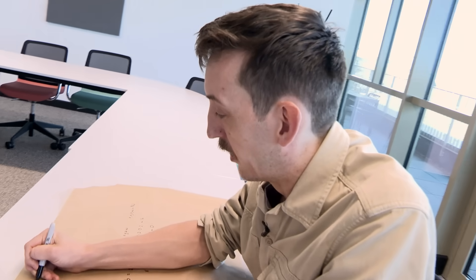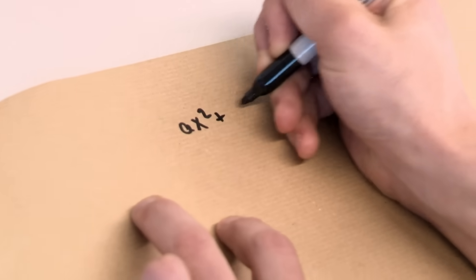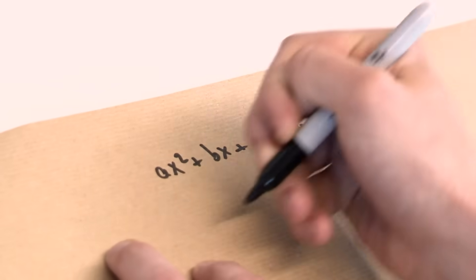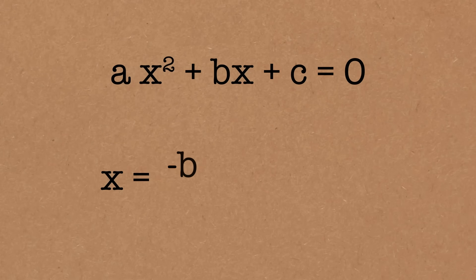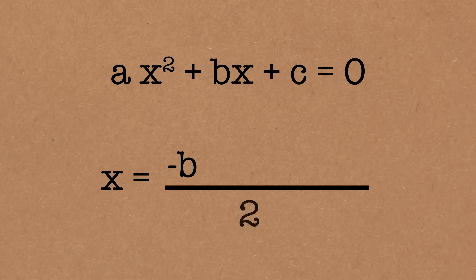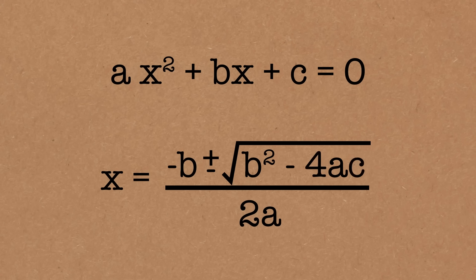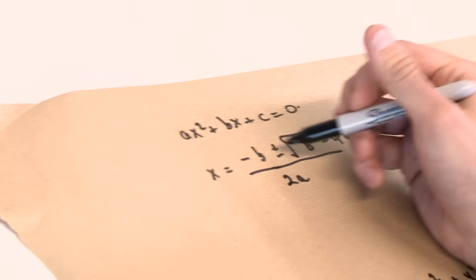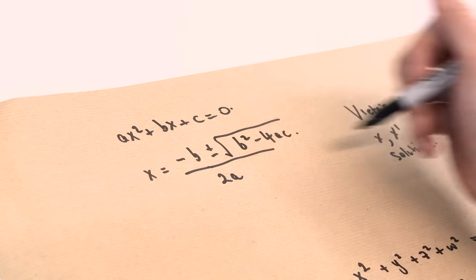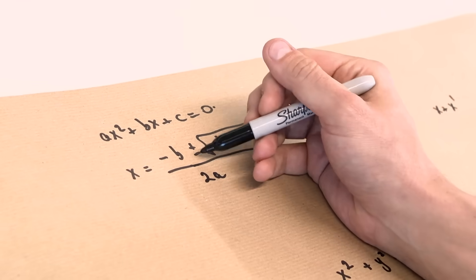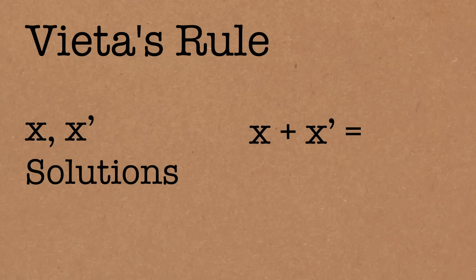This might be familiar if you know about the quadratic formula — this is in the form ax squared plus bx plus c equals zero. Just to remind everyone: the quadratic formula says the solutions are x equals minus b divided by 2a, plus or minus the square root of b squared minus 4ac. And from this you get Vieta's rule. If x and x prime are the two solutions, the plus and minus cancel out, and we get that x plus x prime equals minus b over a.